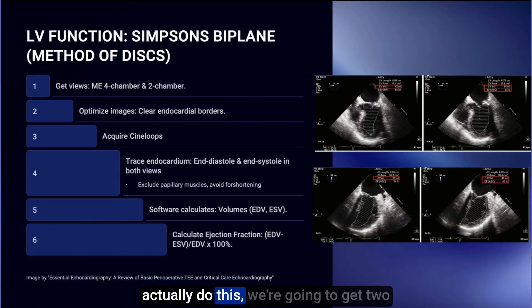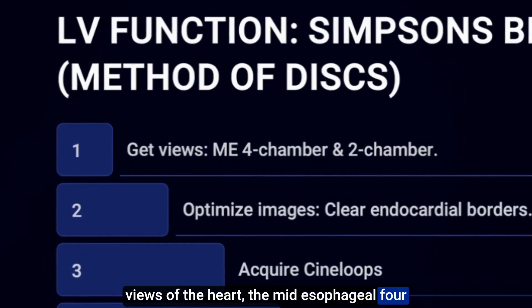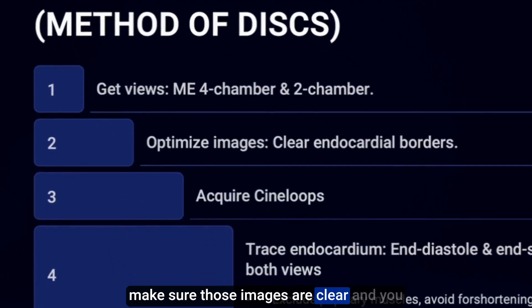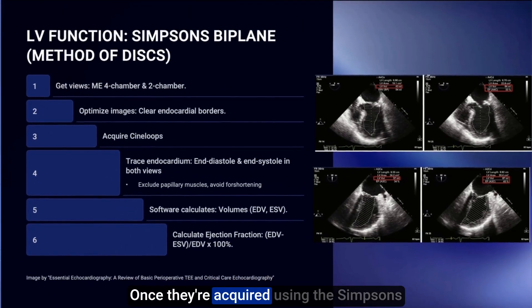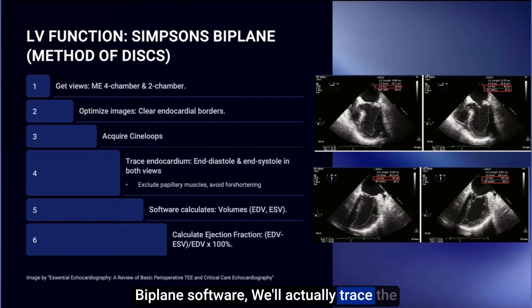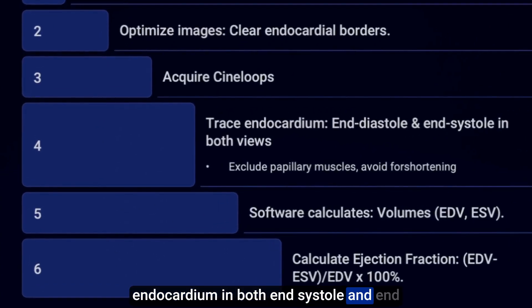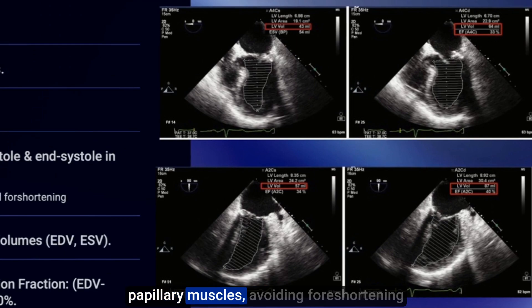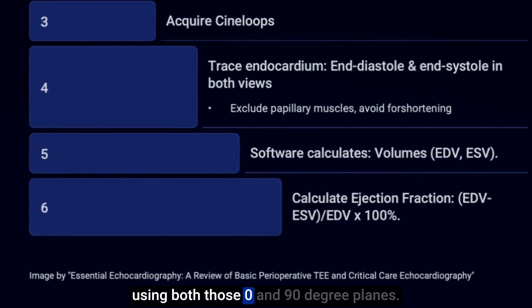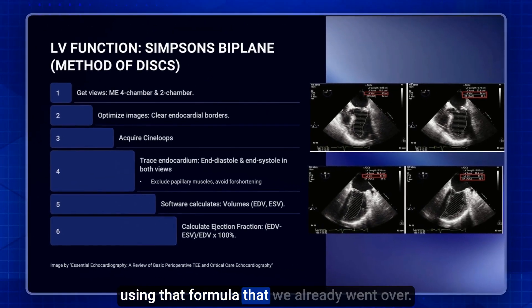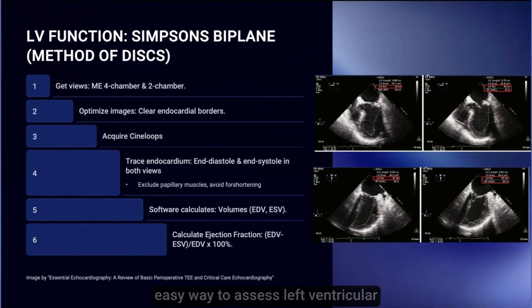Step by step: acquire two views — the mid-esophageal 4-chamber and the mid-esophageal 2-chamber. Make sure images are clear and the endocardial borders are identifiable, then acquire cine loops of both. Using the Simpson's biplane software, trace the endocardium in both end systole and end diastole of each view, excluding papillary muscles and avoiding foreshortening. This gives you an end diastolic volume and an end systolic volume using both the 0- and 90-degree planes, and the software calculates the ejection fraction from those values.